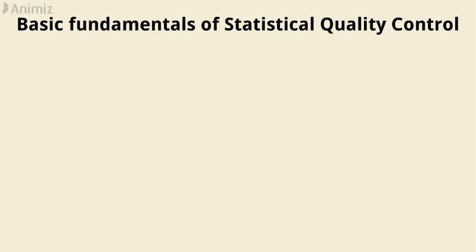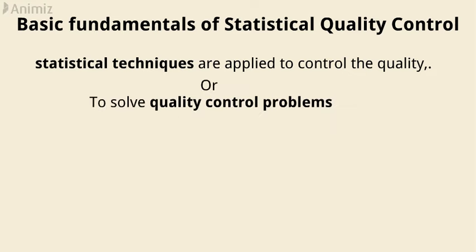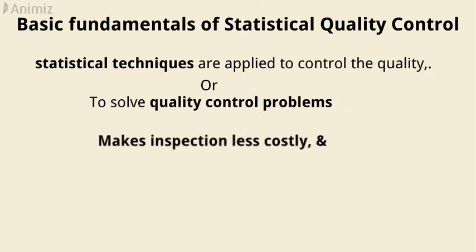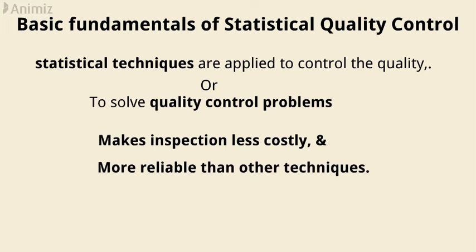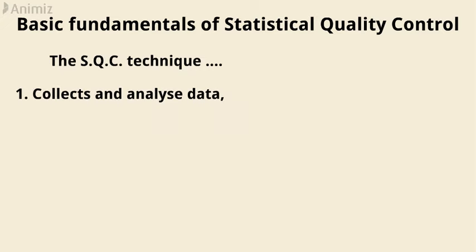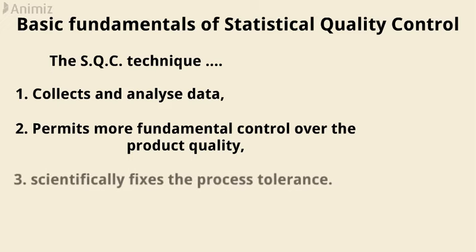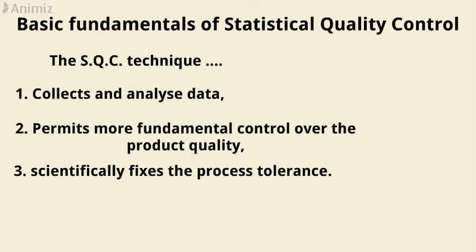Statistical quality control (SQC) applies statistical techniques to control quality or solve quality control problems. It makes inspection less costly and more reliable than other techniques. It controls the quality of outgoing products to conclude whether each product meets the laid quality standard. The SQC technique collects and analyzes data, and permits more fundamental control over product quality. It scientifically fixes the process tolerance.